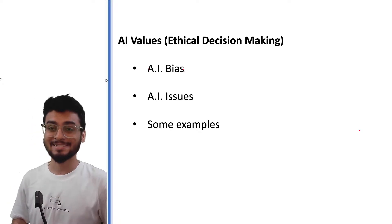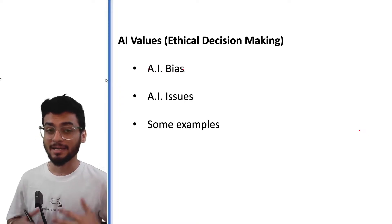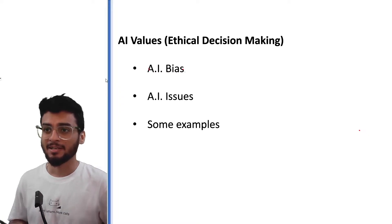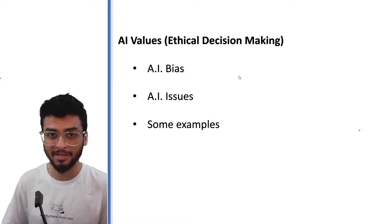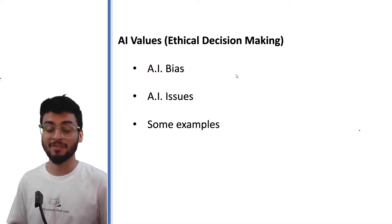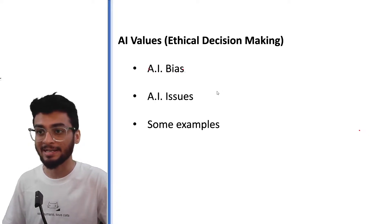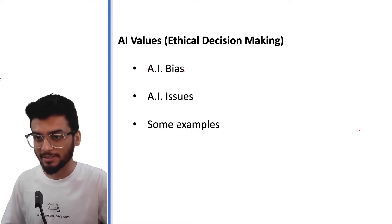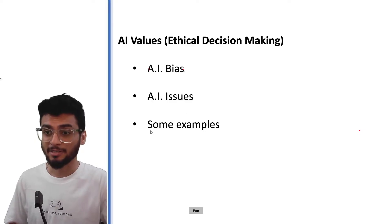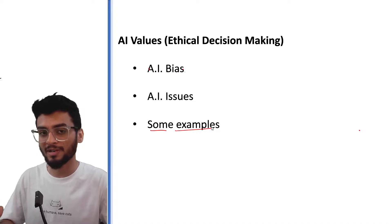Hey guys, I hope you are doing well. This session is specially designed for AI 843, where today we are going to cover unit 4: AI values. This topic has a couple of sub-topics where we will learn about ethics, what ethics actually are, we will look at AI bias, and what certain kinds of issues related to AI can create problems or are still happening.